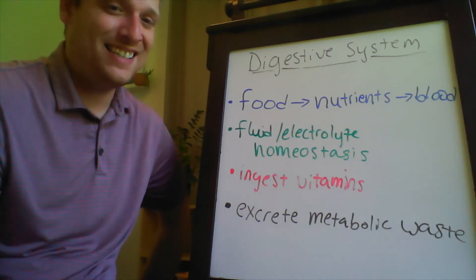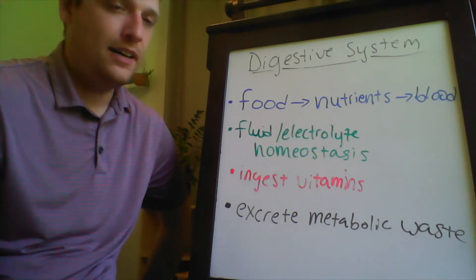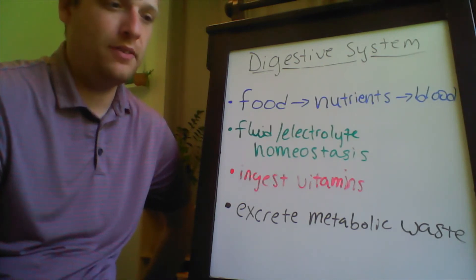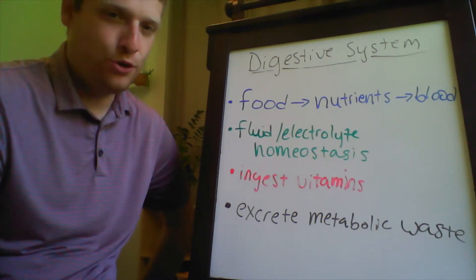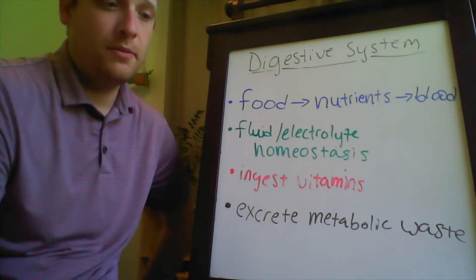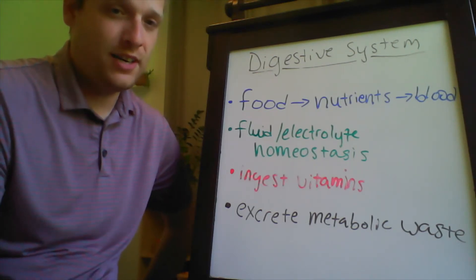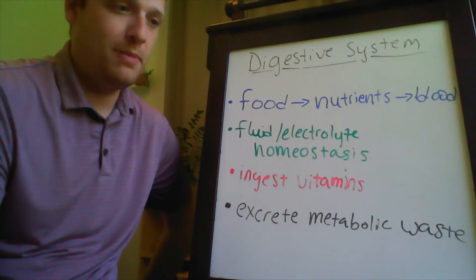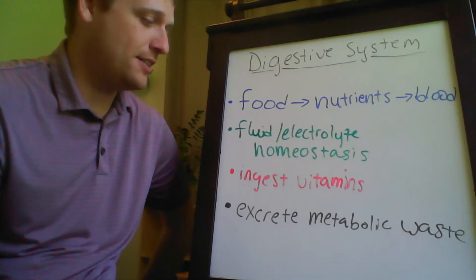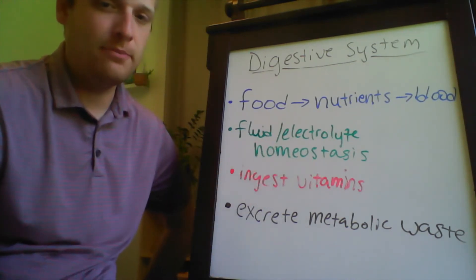In addition to taking things in, the digestive system is also one of those last chances for our body to excrete metabolic waste. For example, we've talked about bilirubin, which is a byproduct of processing hemoglobin in the liver, and it's going to be excreted in the bile through the excretory process of the digestive system. So we can also get rid of things as well as taking in what the body needs.